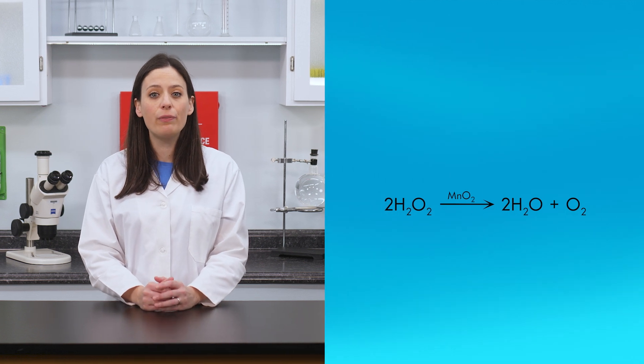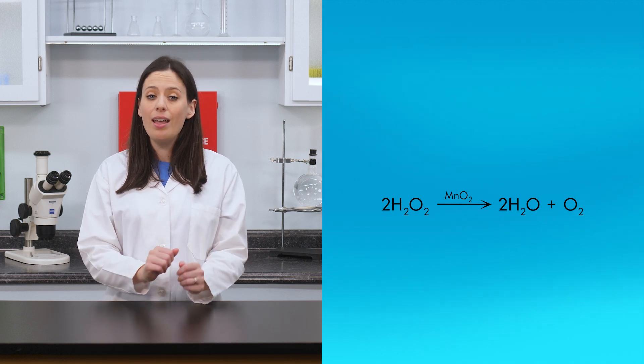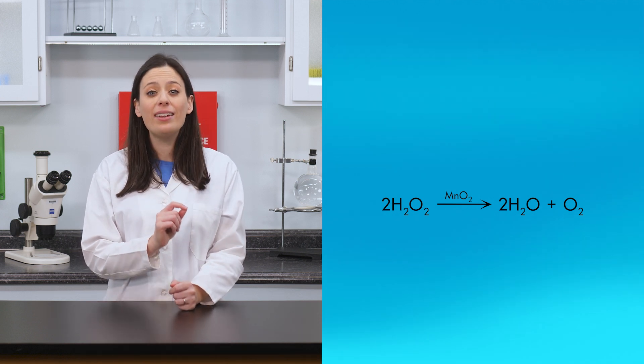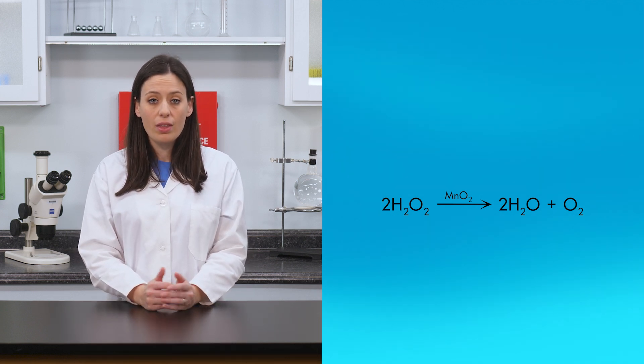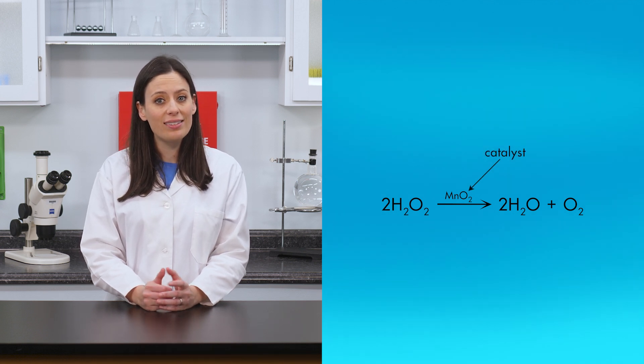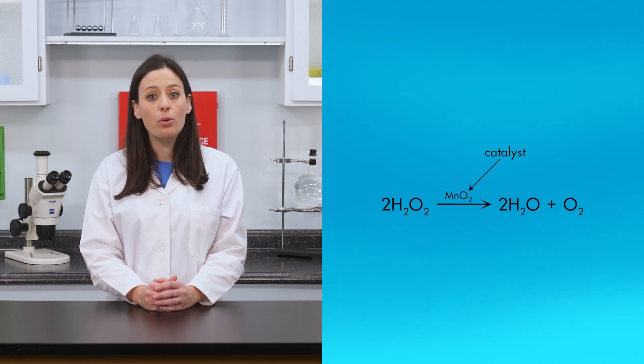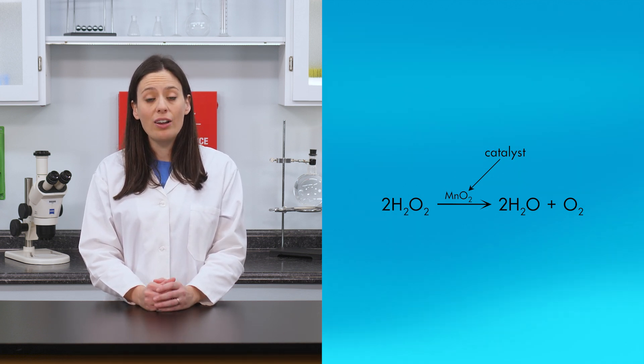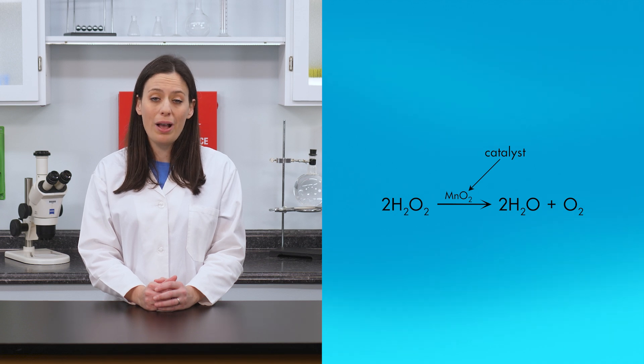Here is the equation for the catalytic decomposition of hydrogen peroxide. Notice that the chemical formula for manganese(IV) oxide is written above the reaction arrow. This is because manganese(IV) oxide is a catalyst, not a reactant. The catalyst affects the rate of the reaction, but when the reaction is complete, the catalyst still remains. It is not chemically altered by the reaction.